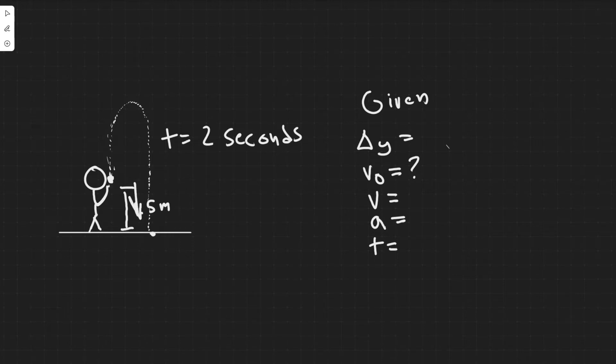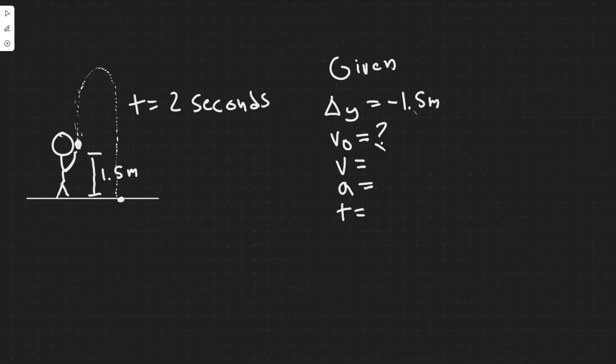So the change in it, we would be 1.5 meters, but generally, if it's downwards, you label it negative. If it's upwards, it's positive. So we have a change of minus 1.5 meters because we go down 1.5 meters from where it starts to where it ends. So the change in y would be minus 1.5 meters, and then do we know the final velocity?